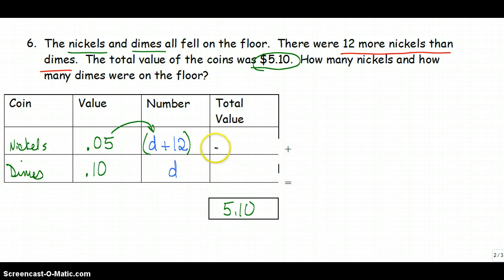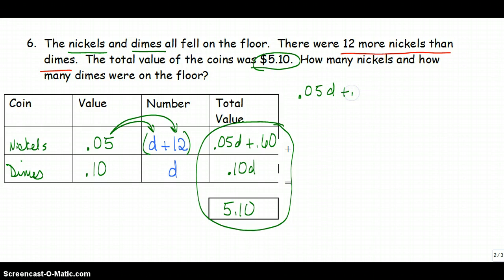So .05 times d gives me .05d, .05 times 12 gives me a positive .60. .10 times d gives me .10d, and I now have my equation that I can solve.